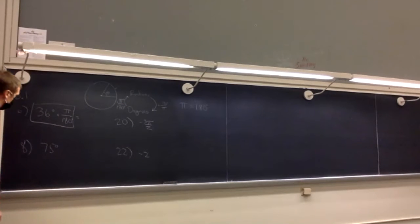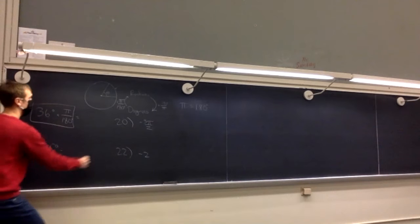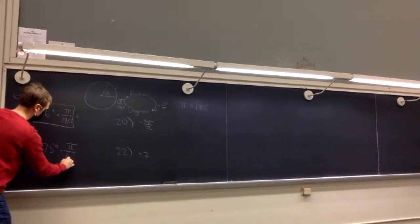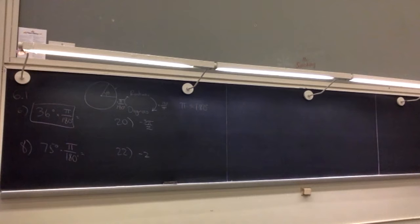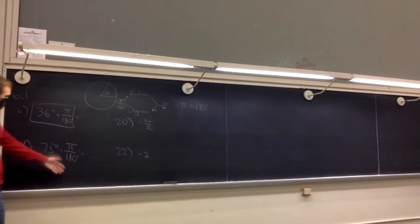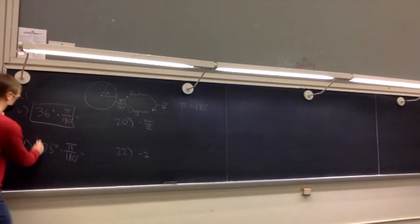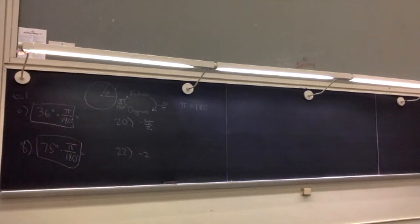75 degrees: we multiply by π over 180. You can simplify — divide by 5 on top and bottom, giving 15π over 36. Then divide by 15 on top and bottom and we have our simplified answer.